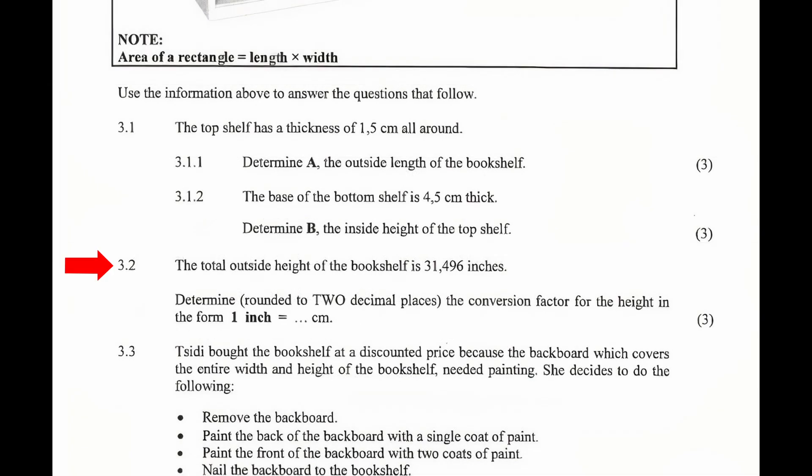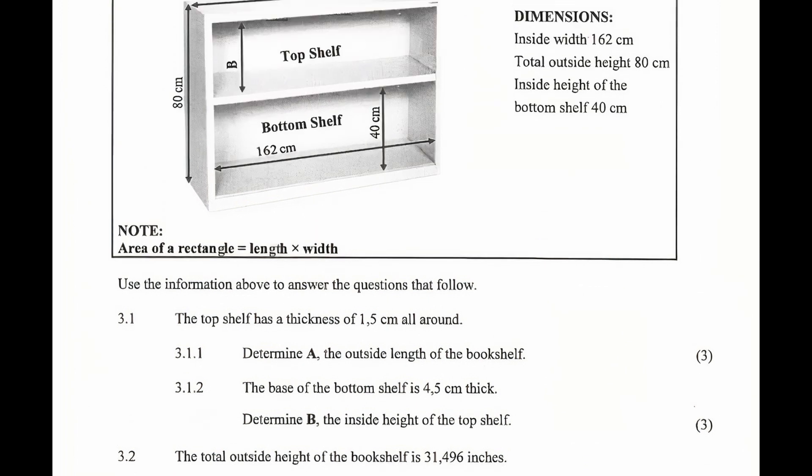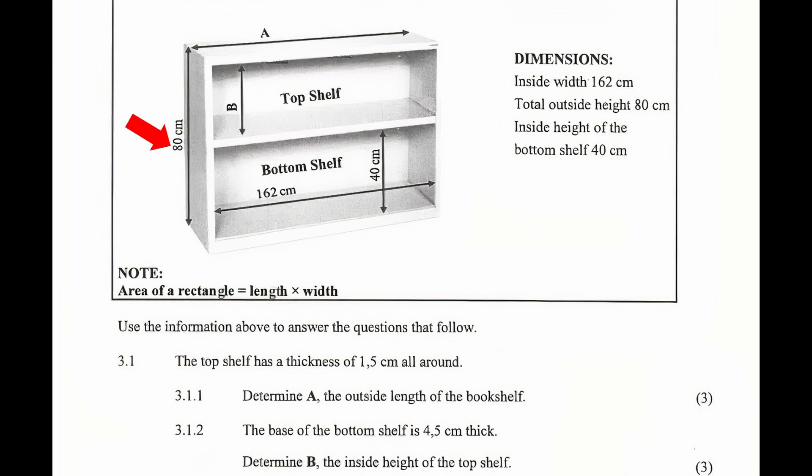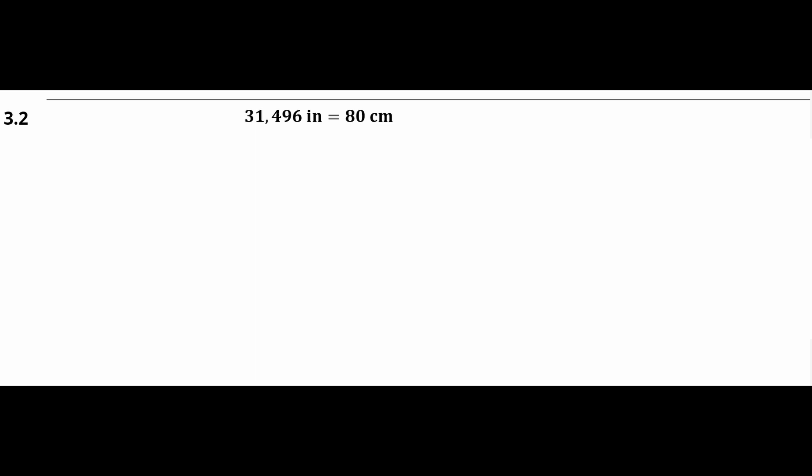3.2: The total outside height of the bookshelf is 31.496 inches. Determine rounded to two decimal places, the conversion factor for height in the form of 1 inch equal to an unknown value of centimeters. From the illustration, the outside height is given as 80 cm. So 31.496 inches equals 80 cm. When we divide both sides of this conversion factor by 31.496 inches, we get a simplified conversion factor for the height as 1 inch equal to 2.54 cm.